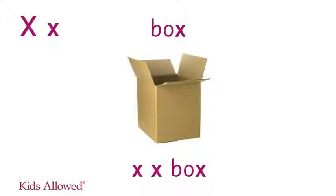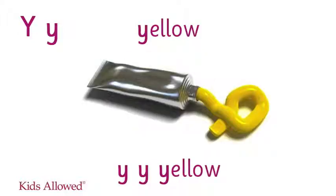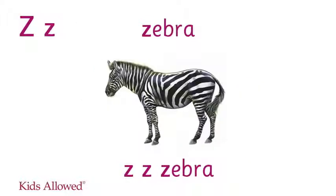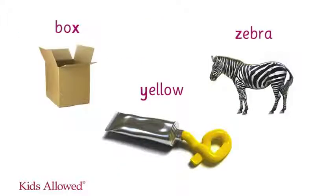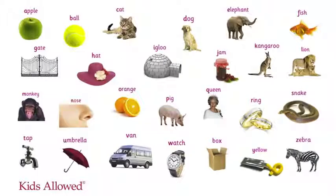X is for box. X, box. Y is for yellow. Y, yellow. Z is for zebra. Z, zebra. Alphabet.